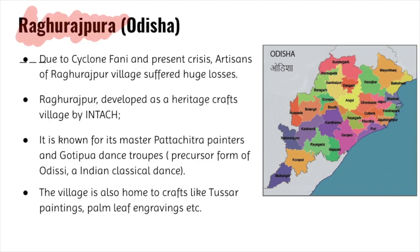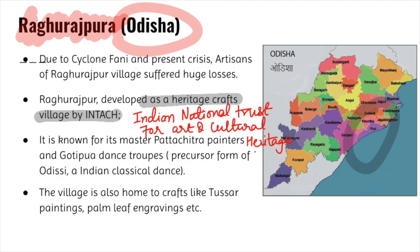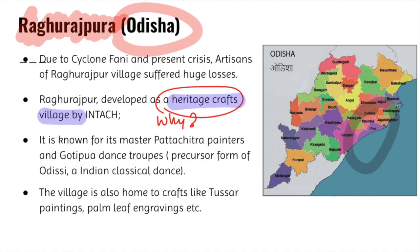Now we will see Raghurajpur, located near Puri in Odisha. Raghurajpur is developed as a heritage craft village by INTACH — the Indian National Trust for Art and Cultural Heritage — which is a non-profit charitable organization. This village has been given the heritage craft village tag because it is famous for two things: Patachitra painting and Gotipua dance.